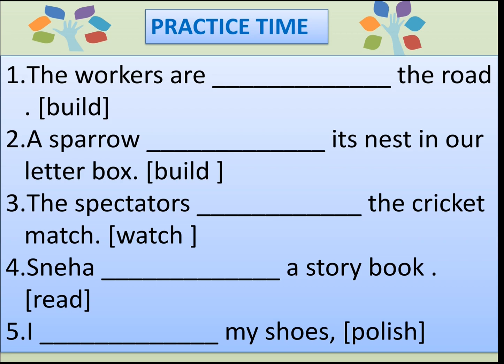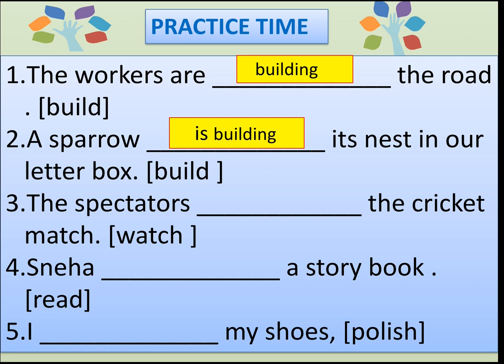Now it's practice time. Fill in the blanks with the correct helping verb and form of the verb. First: 'The workers ___ the road.' Verb: build. Answer: 'The workers are building the road.' Second: 'A sparrow ___ its nest in our letterbox.' Verb: build. A sparrow is singular, so the answer is: 'A sparrow is building its nest in our letterbox.' Third: 'The spectators ___ the cricket match.' Verb: watch. Spectators is plural, so: 'The spectators are watching the cricket match.'